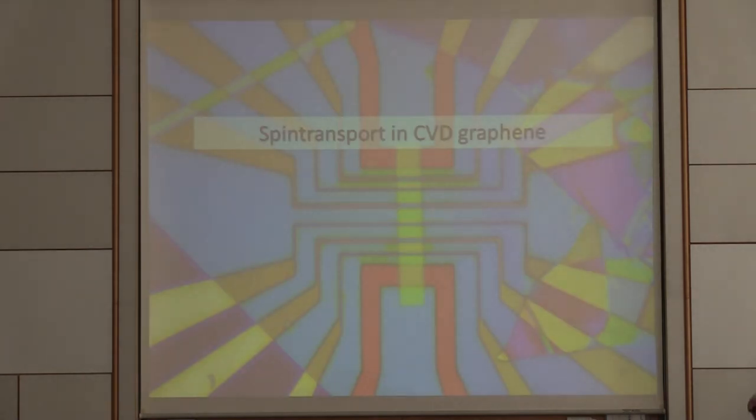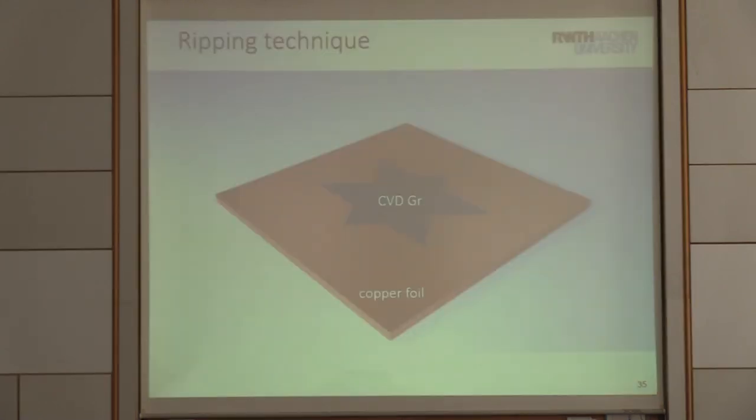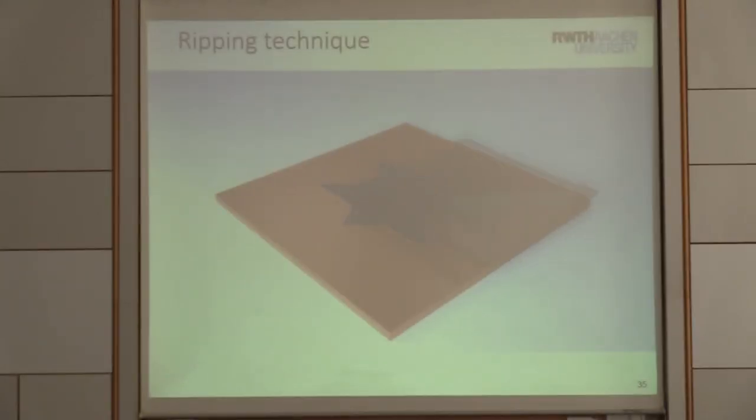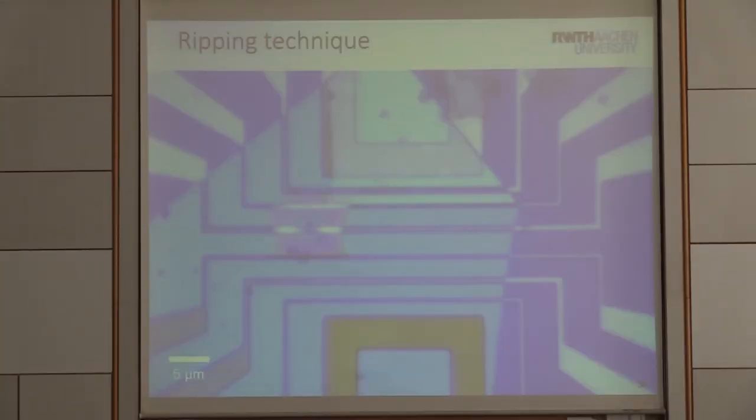Coming back to, we use now this and make spin transport on CVD. It looks like these are our crystals. We make this pick up here. So here we rupture it off. And then we place it here. So now the graphene is sitting here on the edge of this boron nitride.